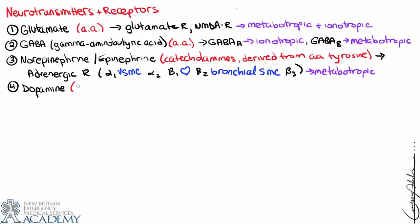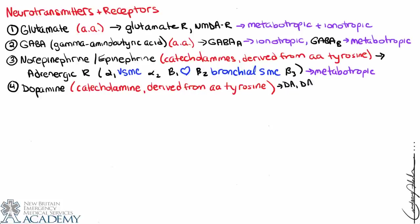Dopamine is also a catecholamine derived from tyrosine, part of the same series of chemical reactions: tyrosine is converted to dopamine, dopamine to norepinephrine, and norepinephrine to epinephrine — all chemically very similar. Dopamine binds to dopamine receptors, abbreviated DA, with subtypes D1 and D2. It also binds to adrenergic receptors, and its mechanism is metabotropic.